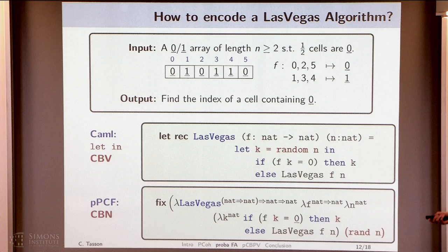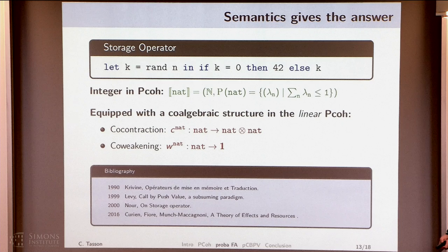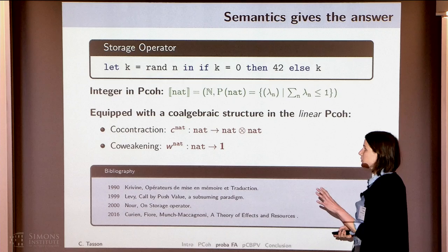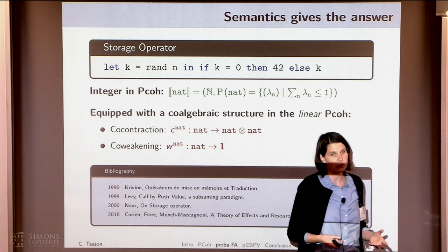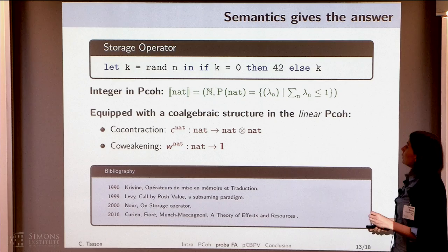It was a nice story. But we trust in semantics. So we decided to look more closely at the interpretation of NAT. And we discovered that on this interpretation, we can define the storage operator — we can interpret a co-contraction and a co-weakening that allows us to duplicate or erase natural numbers.